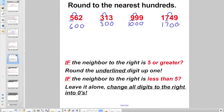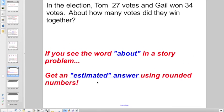Again, if you didn't understand what was going on right there, I strongly suggest hitting rewind. Check this guy out. Basically, what we're trying to say here is, if you see the word about in a story problem, and you will over and over, that's your clue word to get an estimated answer using rounded numbers. So let's take a look at what we've got going on here.